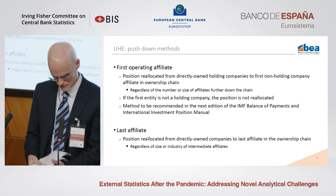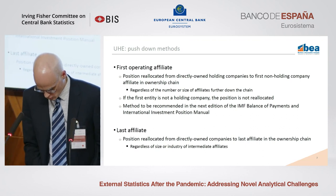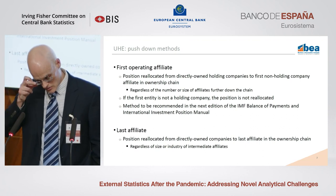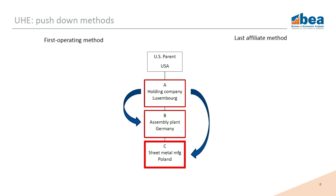You might be thinking the first operating affiliate is not quite what you had in mind when you heard 'ultimate host economy.' The last affiliate method addresses that concern by reallocating the equity position to the last entity in the ownership chain rather than the first. This method ignores all intermediate affiliates and reallocates directly to the bottom of the ownership chain. Let's walk through an ownership chain to see how these methods actually work.